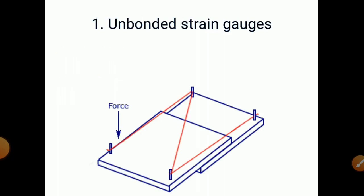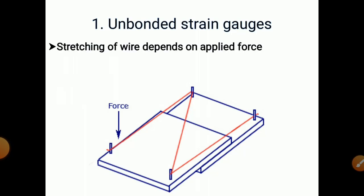This is the unbounded strain gauge. Stretching of wire depends on applied force. When we apply force to the left-hand side plate, the wire will get stretched. So this stretching of wire depends on applied force — this is the unbounded type of strain gauge.